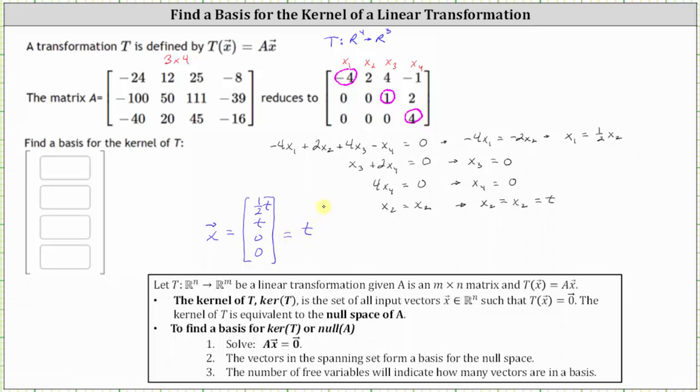Factoring out the t, we have t times the vector one half, one, zero, zero.